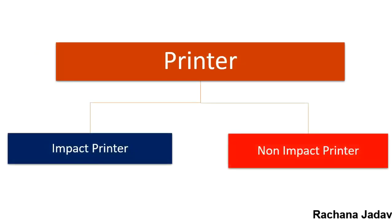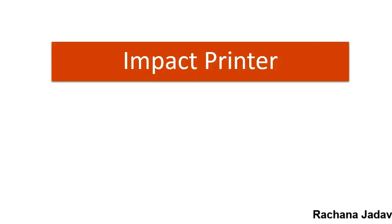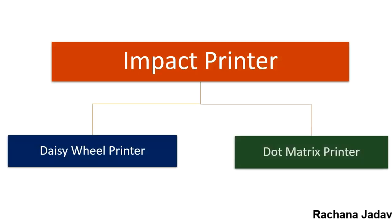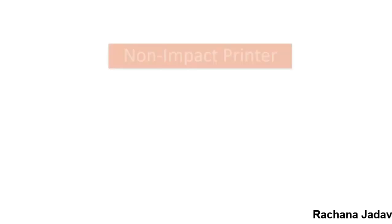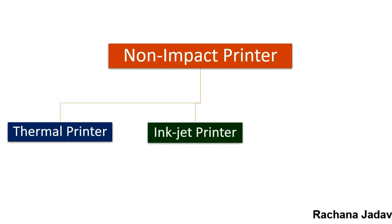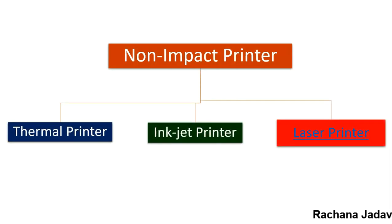Next is the printer. There are two types: impact printer and non-impact printer. The impact printer is directly connected with the paper while in non-impact it is not directly connected. Impact printers are also known as character printers, and in that category we have the daisy wheel printer and dot matrix printer. The daisy wheel is more noisy compared to the dot matrix printer, and the quality is good in the dot matrix printer.